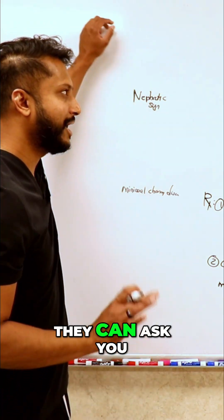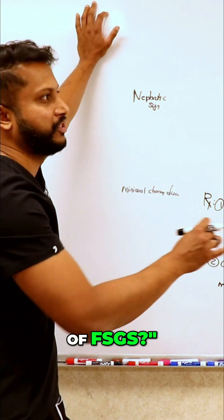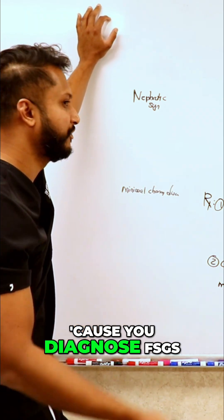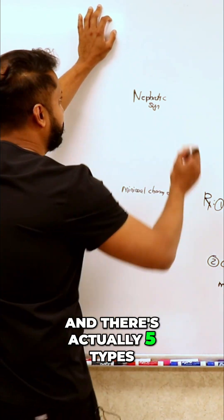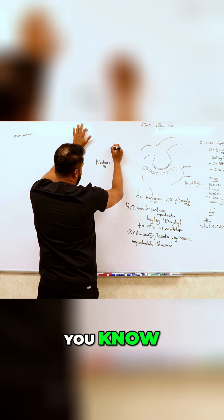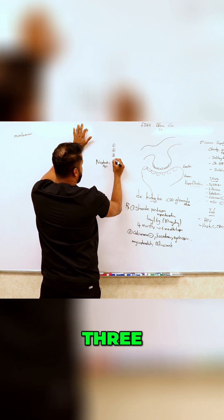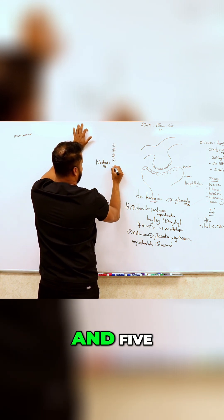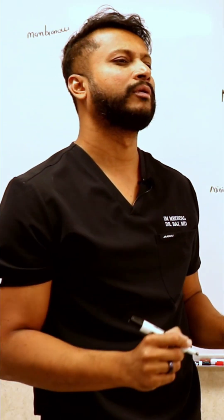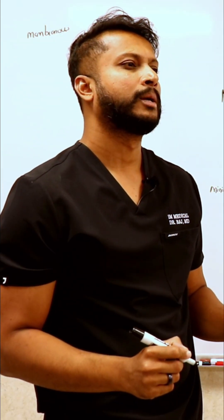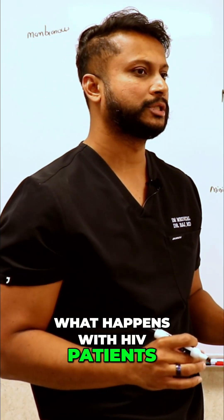Sometimes they can go a little deeper and ask about the types of FSGS, because there are actually five types. What are some of the types you know? What specific type do HIV patients have?